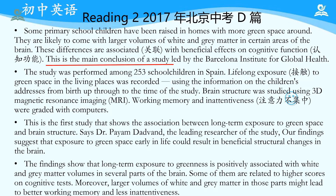这篇文章的用词和观点比较抽象，但只要能把research常见的几个要素理清楚，把关系梳顺，就可以把握住文章的关键。比如第一段：This is the main conclusion of the study. 这句话提示前面是一个main conclusion，是需要重点关注的主旨段落。接下来揭示主要观点，然后The study was performed among 253 school children in Spain，从研究对象开始说起。